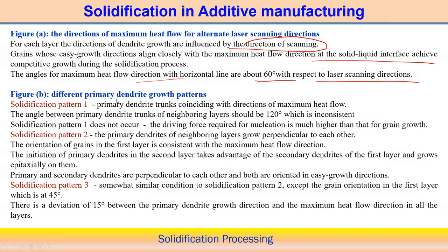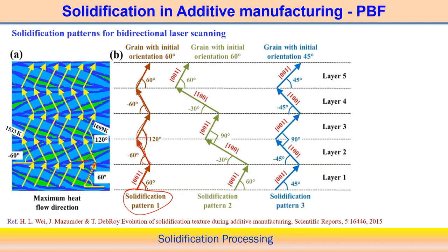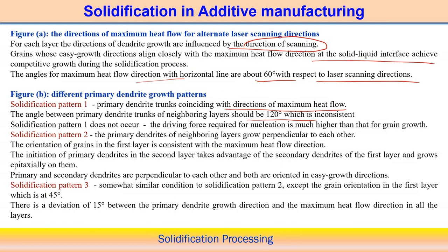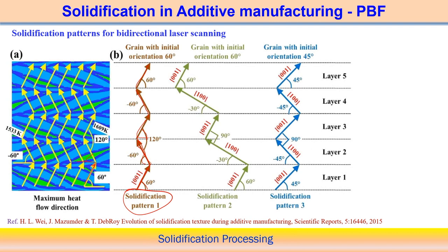In pattern one, primary dendritic trunks coincide with the direction of maximum heat flow for the first layer. But the angle between primary dendritic trunks of neighboring layers would be around 120 degrees, which is not consistent. Therefore, solidification pattern one does not usually occur — the driving force for nucleation is much greater than that required for grain growth — so pattern one simply does not occur in bidirectional laser scanning.